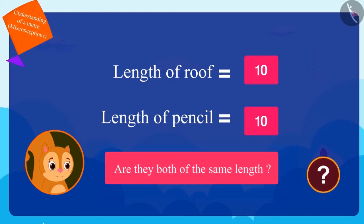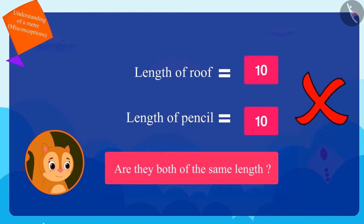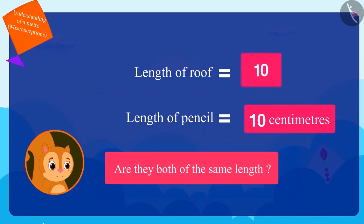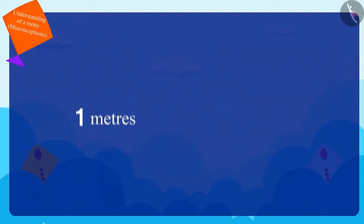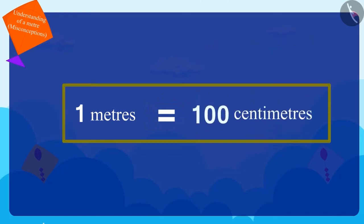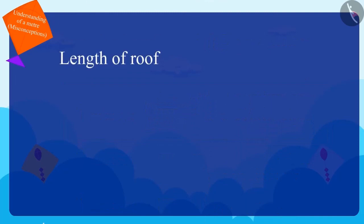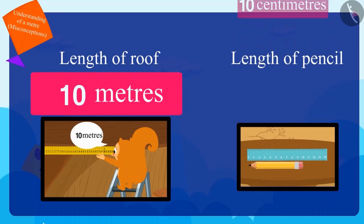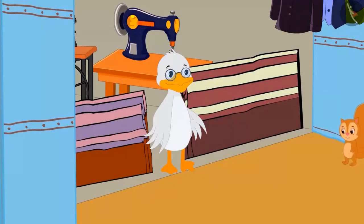What do you think, children? Is Chanda's thinking correct? No. Chanda's pencil is 10 centimeters in length while her roof is 10 meters in length. As you know, 100 centimeters is equal to 1 meter. The roof is 10 meters long, which means the roof is much bigger than the pencil — the same number does not mean the same length when the units are different.